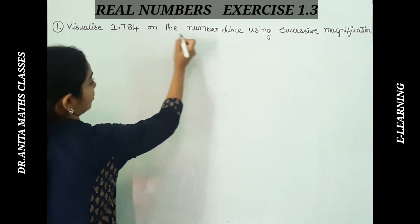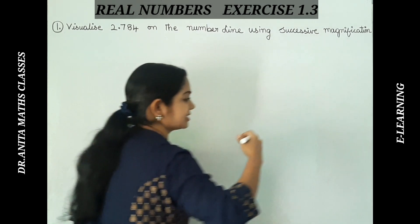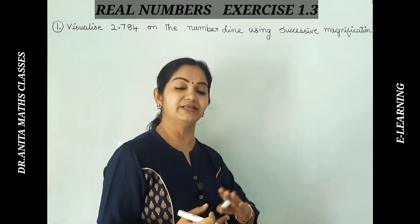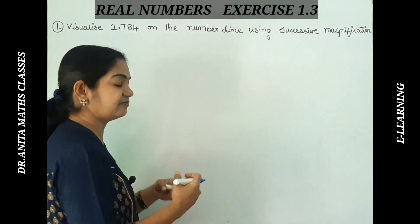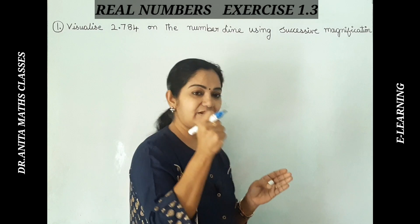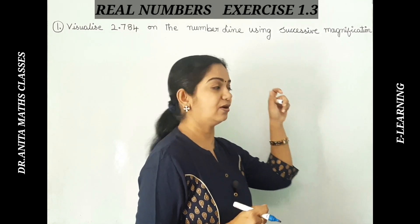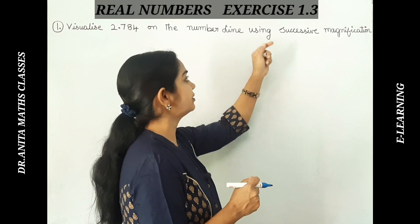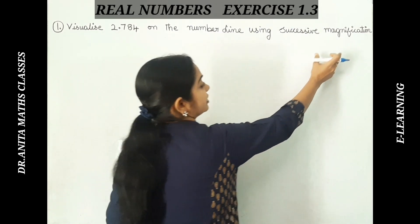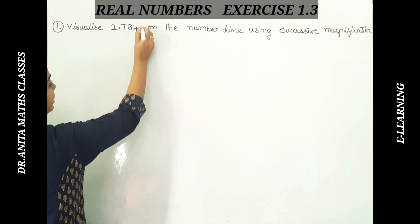The first problem is to represent 2.784 on the number line. The word 'successive' means in a chain, next-to-next — like successor and predecessor. 'Magnification' refers to the magnifying glass used in physics to zoom in on letters or objects, making them appear bigger. So using this successive magnification method, we want to represent 2.784 on the number line.